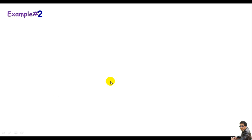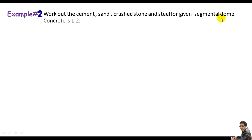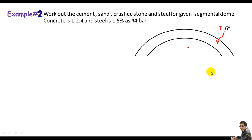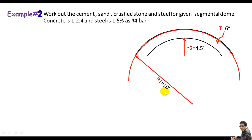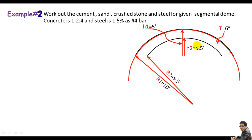Now for Example 2, we are asked to work out cement, sand, crushed stone, and steel for a given segmental dome — this is a little more challenging than the half-spherical dome. The thickness is 6 inches, the height is 4.5 feet. Drawing a full circle, the external radius R1 is 10 feet and the interior radius R2 is 9.5 feet. The external height H1 is 5 feet (4.5 plus 6 inches).